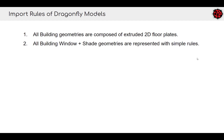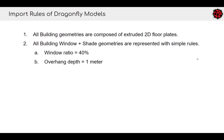The other important rule is that there are no individual window or shade geometries within the Dragonfly schema — they are all represented through simple sets of rules. There's no actual window geometry object; instead you'll find something like 'window ratio equals 40%,' which gets assigned to your Dragonfly room 2Ds. Similarly for shades, you just have a rule that says give me an overhang with a depth of a meter — there's no actual overhang object.